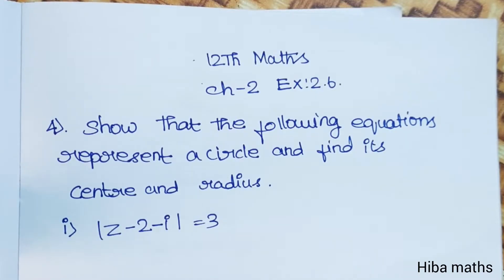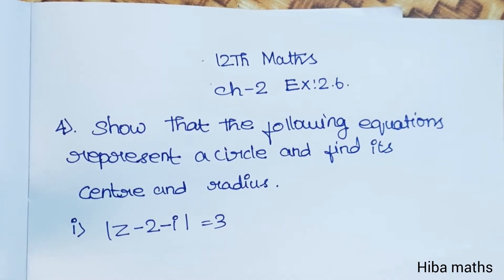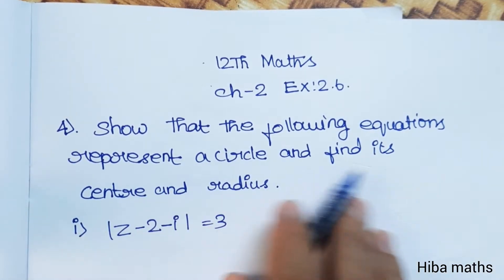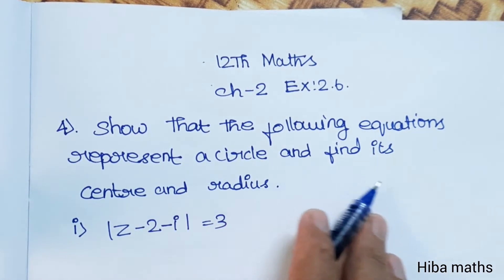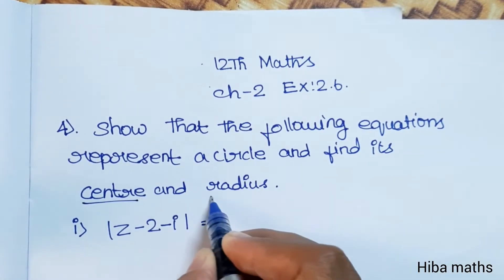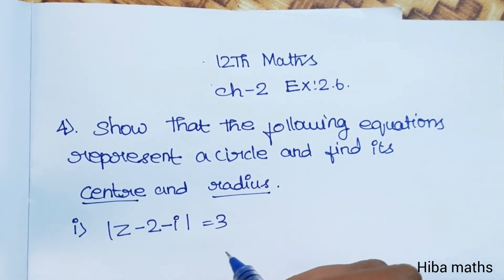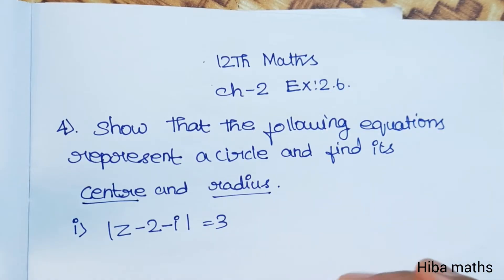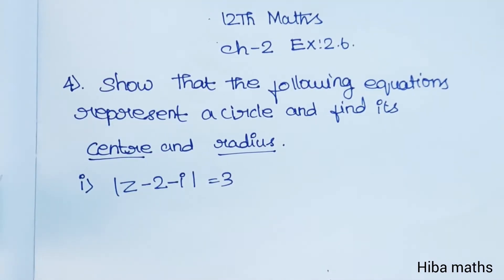Hello students, welcome to Hibermax 12 Standard Max Chapter 2, Exercise 2.6, 4th question. Show that the following equations represent a circle and find its center and radius. We will convert the given equations to the general form of a circle and find the center and radius.